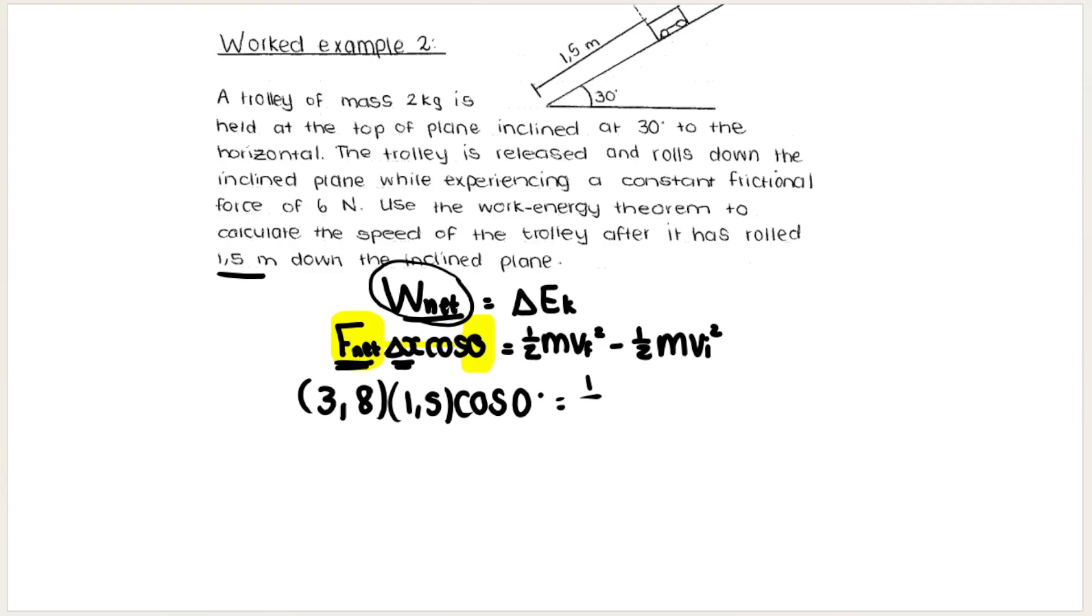And then that is equal to ½ the mass of the trolley is 2, the final velocity is what we're looking for so vf² is my unknown, then again my mass is 2 and my initial velocity is zero because they said that the trolley was initially held at the top of the plane, so somebody was holding it up here, it was initially stationary.